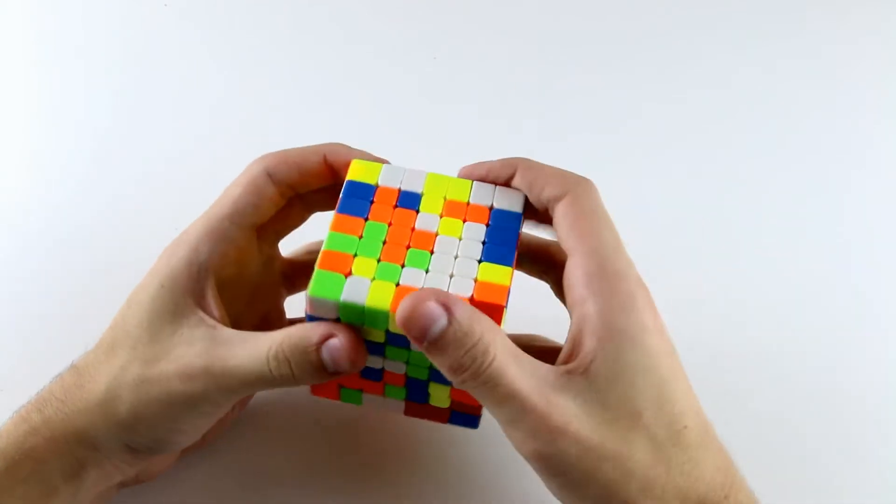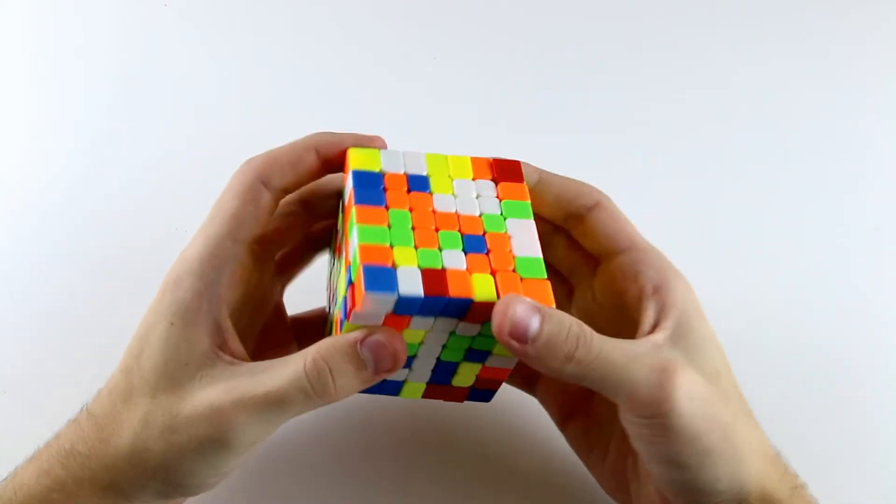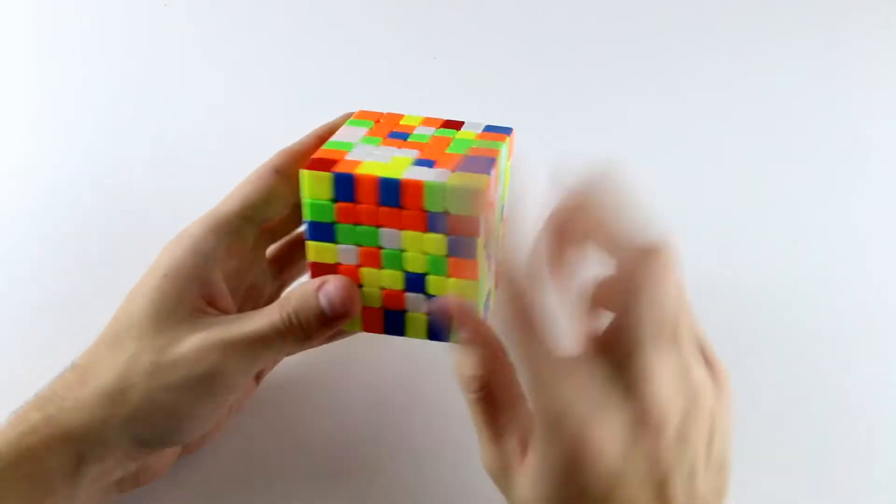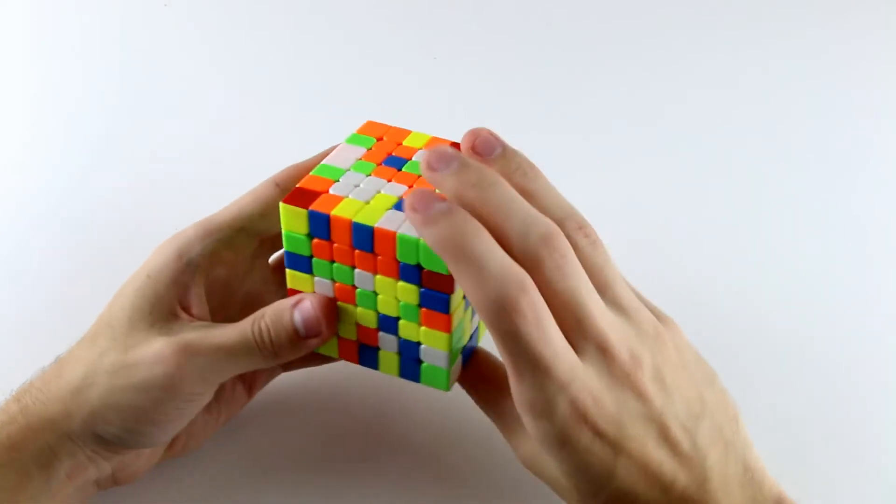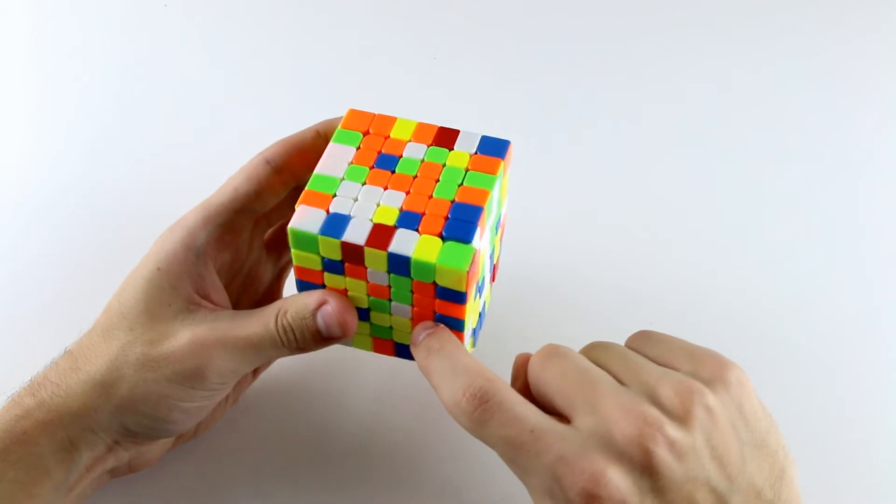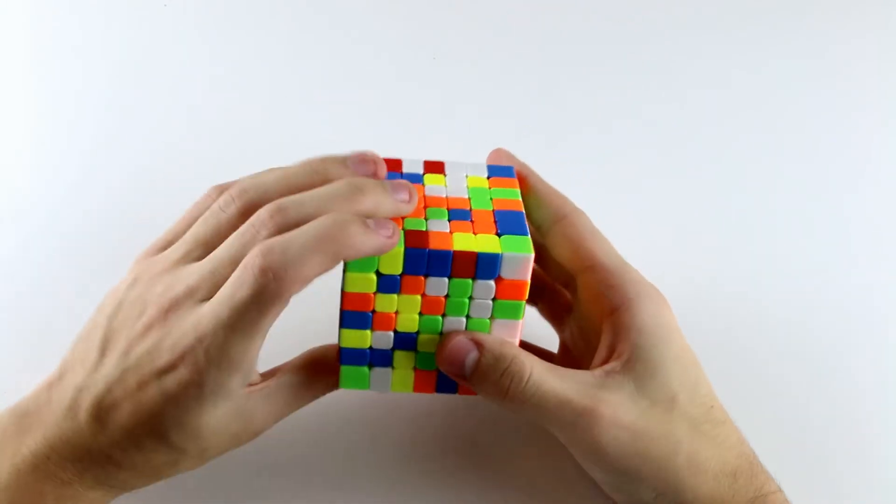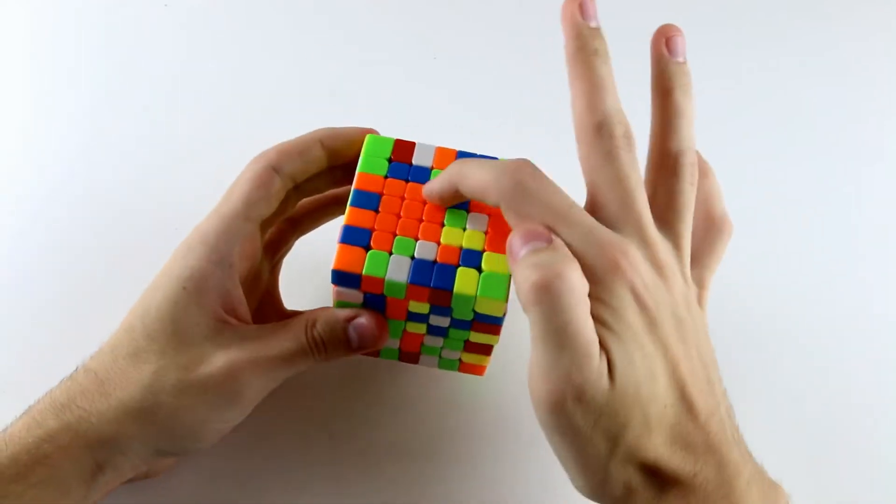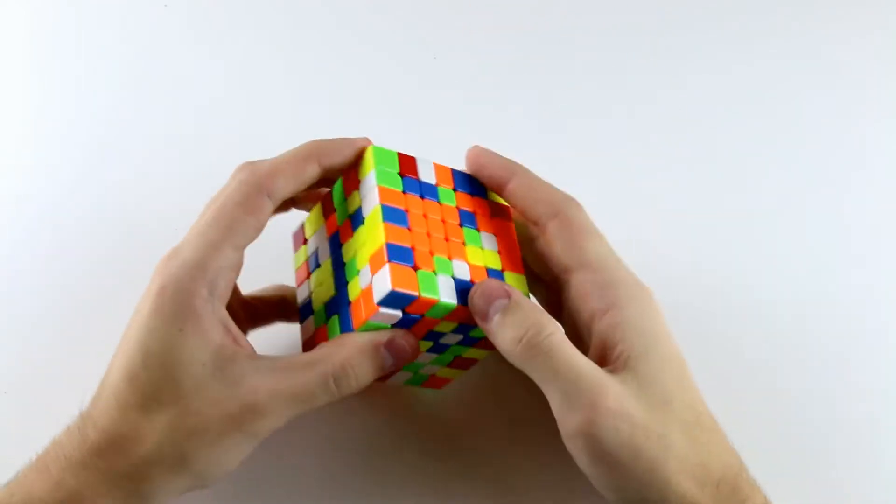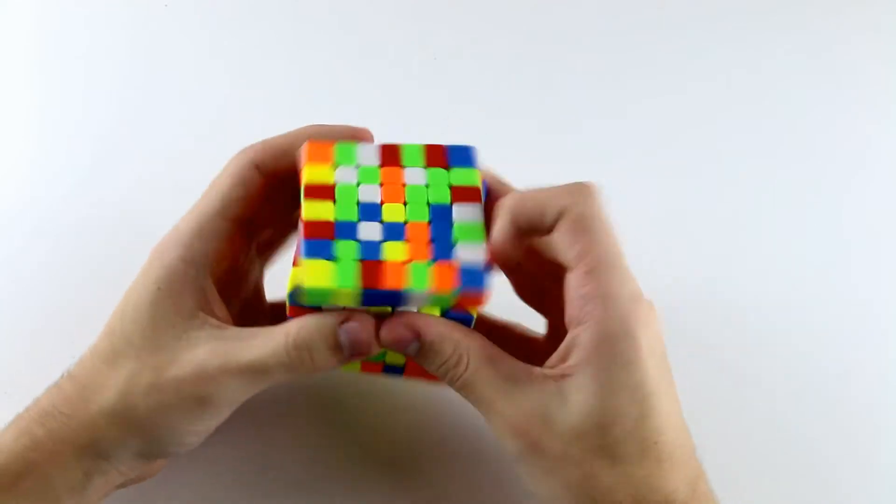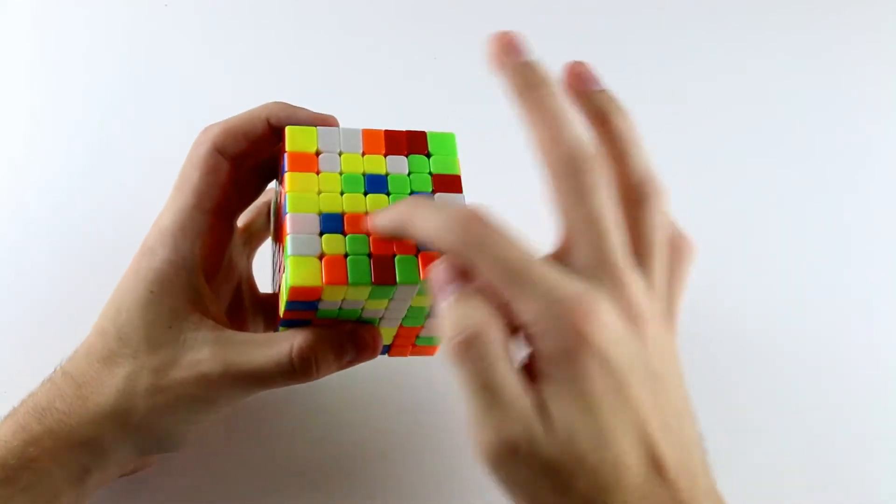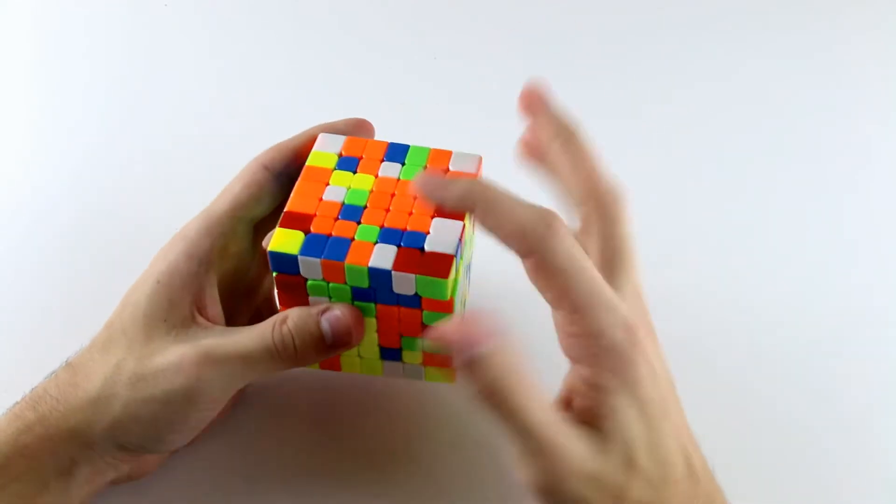And then what I can do, actually notice we had these three edges paired up which is quite nice, so what I'm going to do then is insert these three like that and then insert this last edge. So now we have this line, this line and this line and then make the final 1x3 inner bar and then insert those.